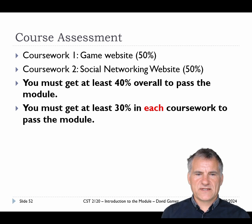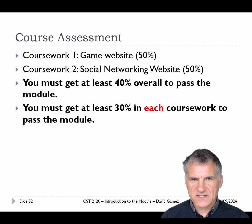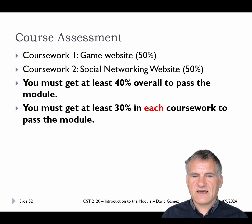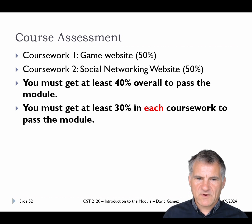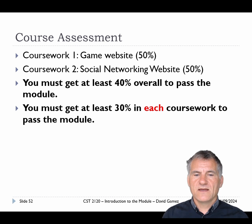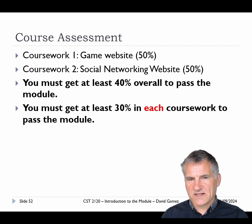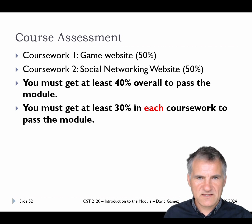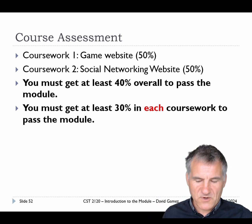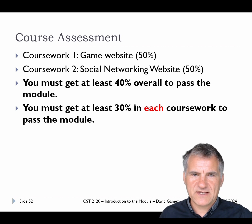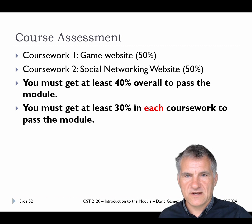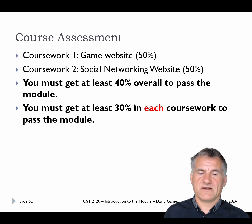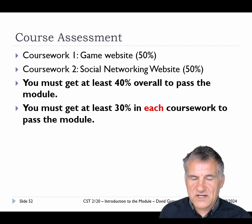This course has two assessment components: coursework one, the game website, and coursework two, the social networking website. Each piece of coursework is worth half the marks of the module, combined into your overall mark. You need to get 40% overall to pass the module, and you also need to get at least 30% in each individual piece of coursework. So it's not enough to get 80% on the game website and ignore the social networking website. Please put serious effort into both, or you'll have to resit it with a capped mark.